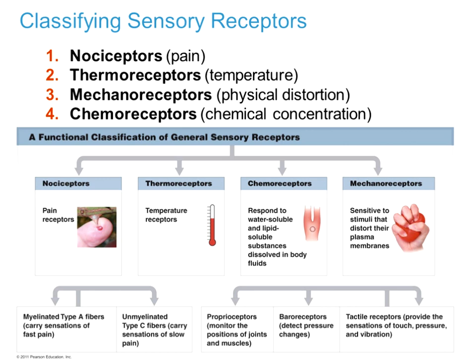Our fourth category is chemoreceptors. We'll spend more time on these when we cover respiratory physiology, because they monitor whether our blood has the right chemical makeup — the right oxygen, carbon dioxide, pH, and blood gas content.